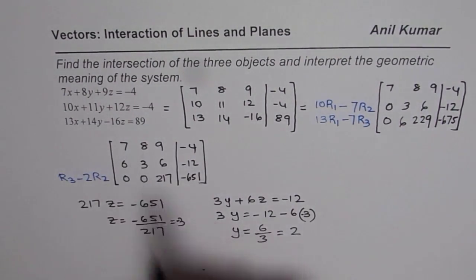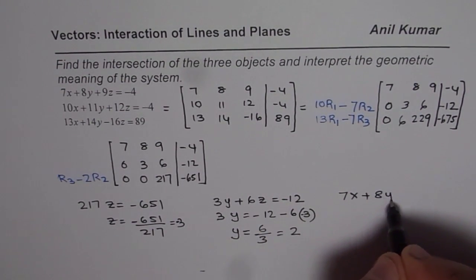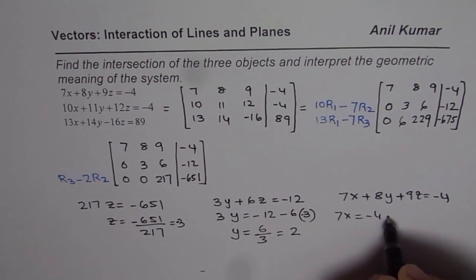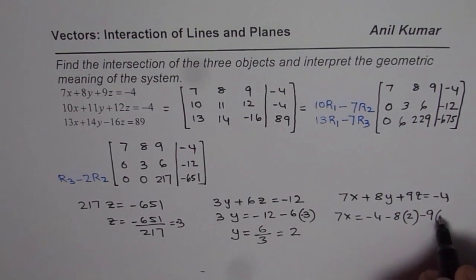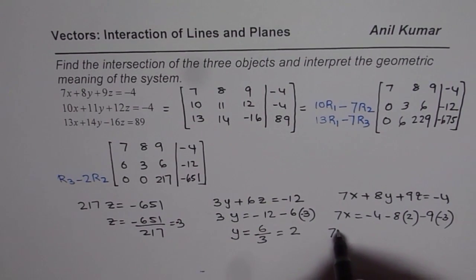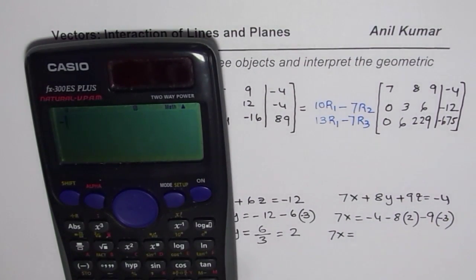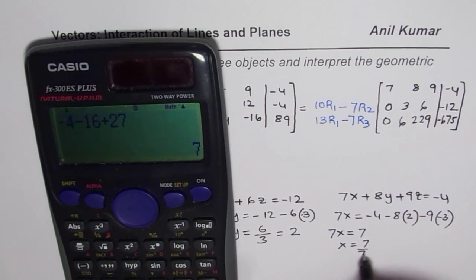Now we find X using the first row equation: 7X plus 8Y plus 9Z equals minus 4. Substituting Y equals 2 and Z equals minus 3: 7X equals minus 4 minus 16 plus 27 equals 7. Therefore X equals 7 divided by 7 equals 1.